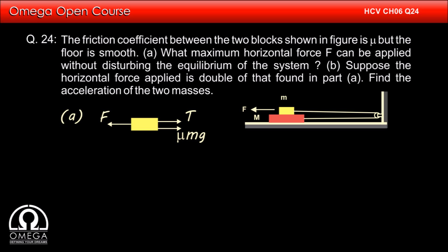Since the normal in this case is mg and we have to find the maximum value of F, friction must be at its maximum value, i.e., mu mg. Balancing the forces in horizontal direction, we get F is equal to T plus mu mg.